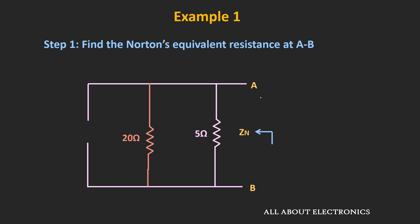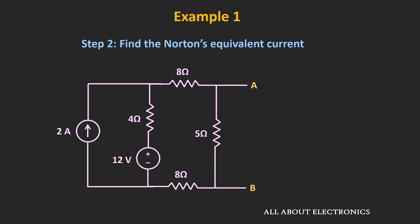That 20Ω is then connected in parallel with the 5Ω resistor. So the Norton's equivalent resistance seen through terminals A and B is Zn = 5Ω in parallel with 20Ω, which equals (5 × 20) / (5 + 20) = 4Ω. Now let's find the short-circuit current by shorting terminals A and B. Once shorted, the 5Ω resistor also gets short-circuited, and the equivalent circuit has two loops.